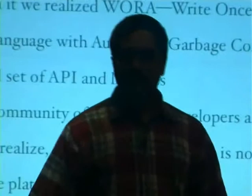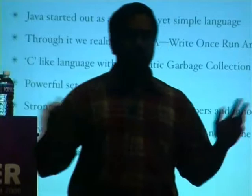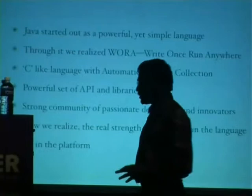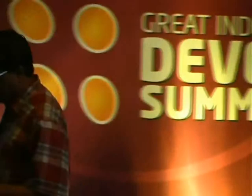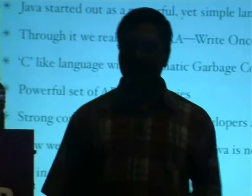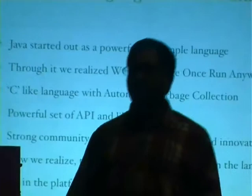Java started out as a very powerful yet simple language. Those of us who came from C++ had a breath of fresh air when we didn't have to deal with all that complexity. But what happened over the past decade is that the Java language itself has become somewhat complex. One of the strengths of Java was not just the language but the platform — the so-called 'write once, run anywhere.' The real strength of Java today is the platform, not the language itself.